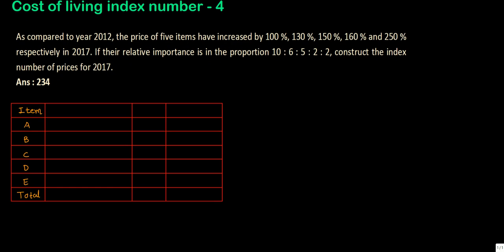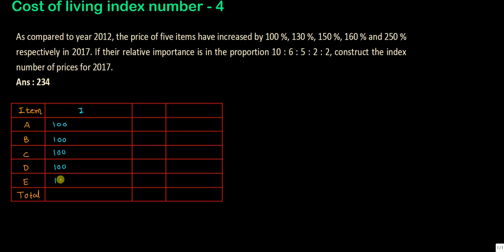Our table is ready. Five items are given — you can label them A, B, C, D, E or 1, 2, 3, 4, 5. The first column is I, the index number. Since percentage increases are given, we write 100 against each item as the base year index number.